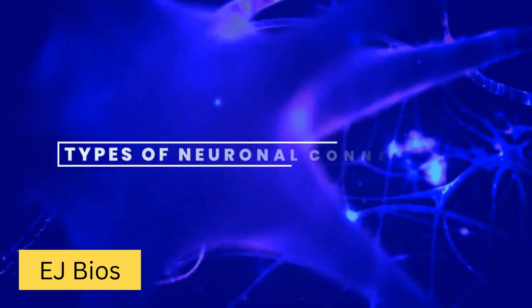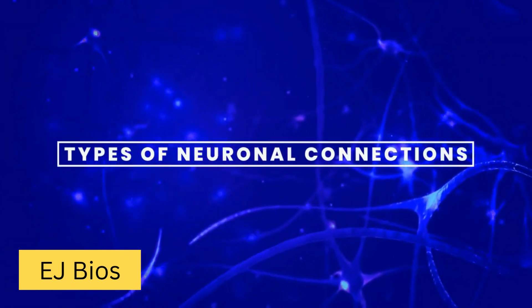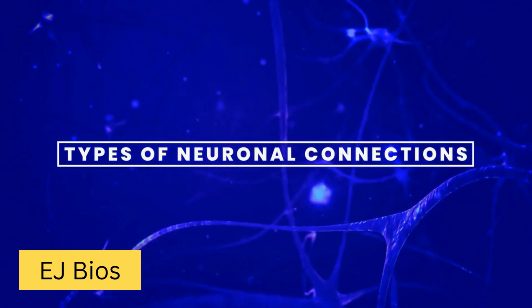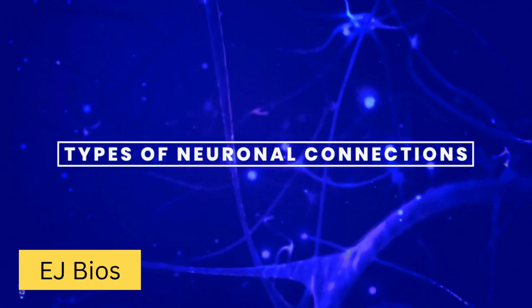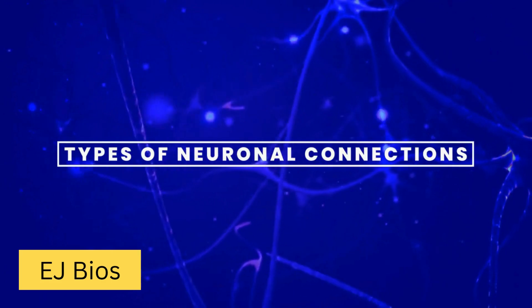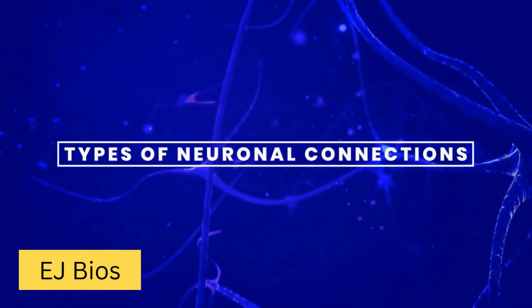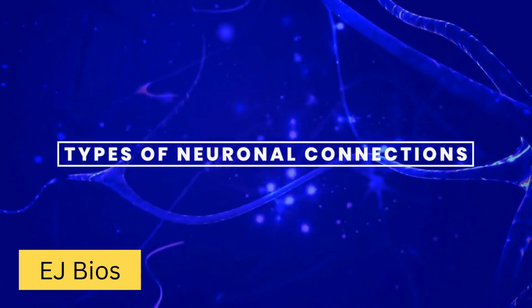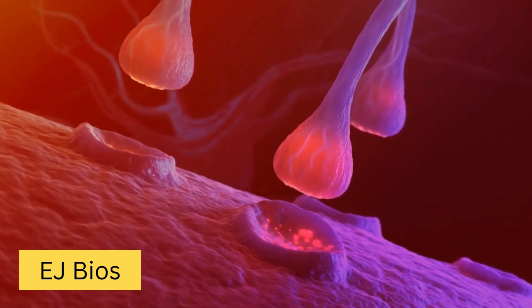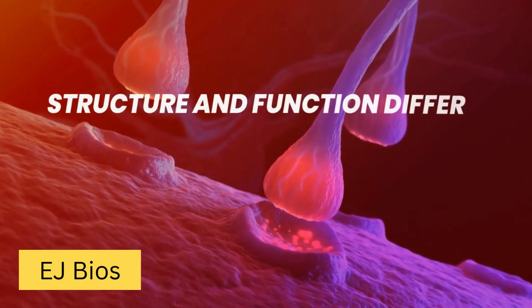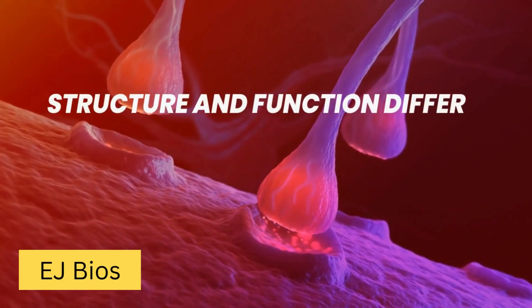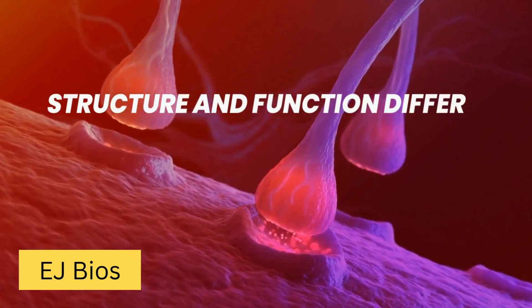Chemical and electrical synapses are two distinct types of connections between neurons. They differ in their structure, mechanism, and function.